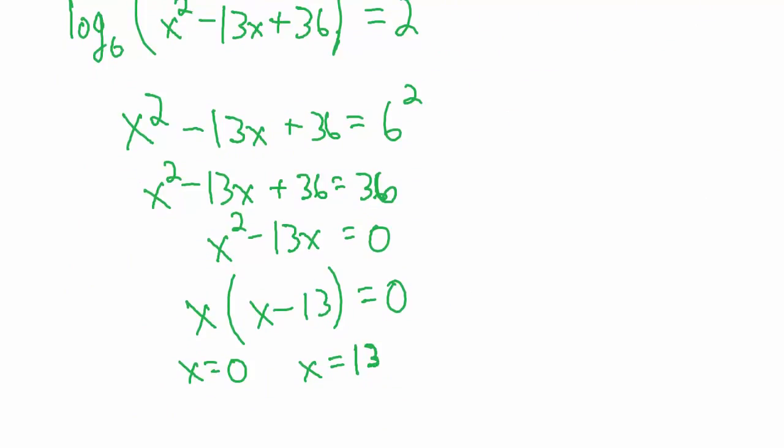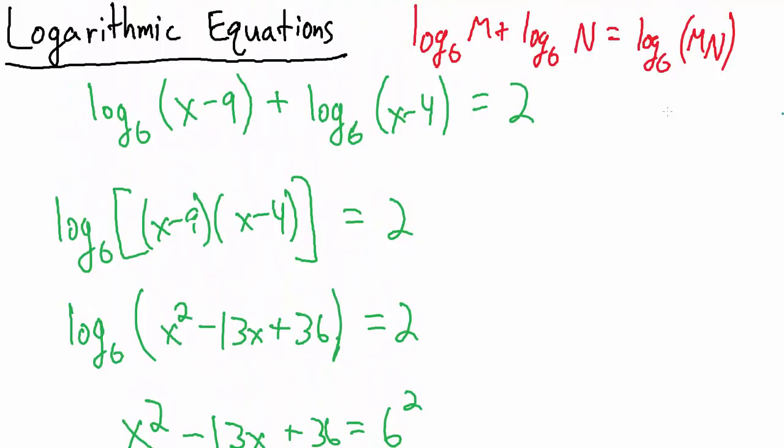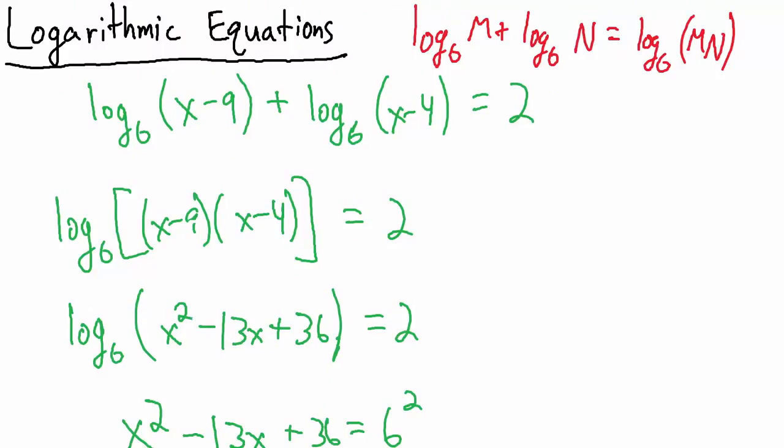What happens if we plug in x equals 0 back in our original equation where we first started? So if we plug x equals 0 back into our original equation we get base 6 log of 0 minus 9 plus base 6 log of 0 minus 4.